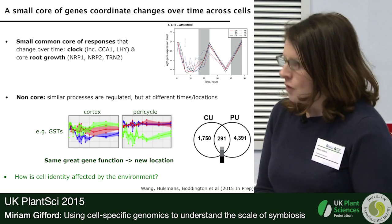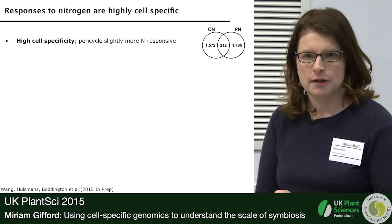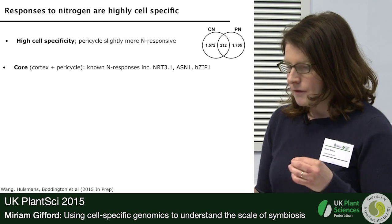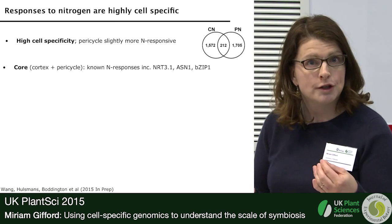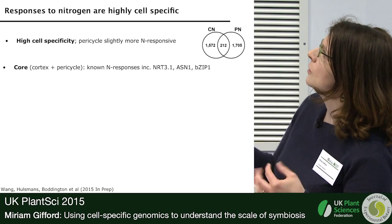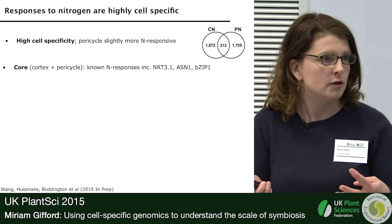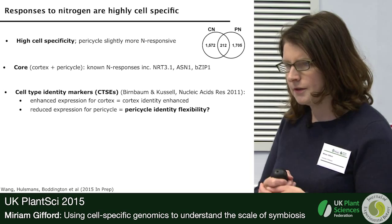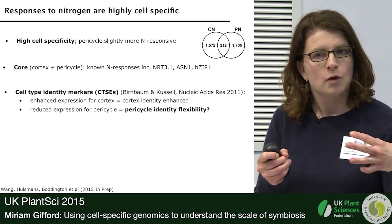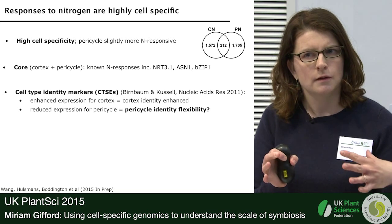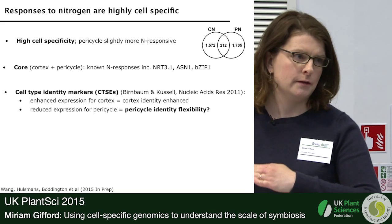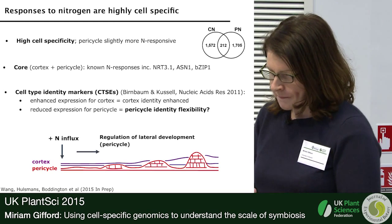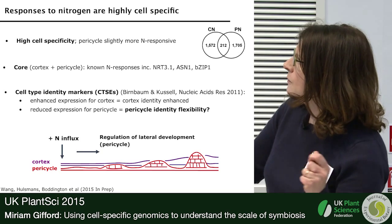How is this affected by the environment? I'll show one example of an abiotic change: the response to nitrogen. Again, there's a high degree of cell specificity. The pericycle is slightly more responsive to nitrogen. The core genes that change in both cortex and pericycle include some of the key known nitrogen responses, which we know should be cell-type independent. When we looked at identity markers, cortical markers showed enhanced cortex specificity when nitrogen was added, but pericycle-specific markers actually showed reduced specificity — suggesting the pericycle identity might be more flexible.